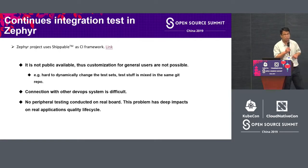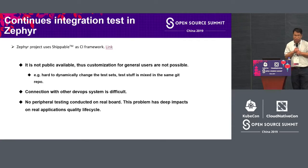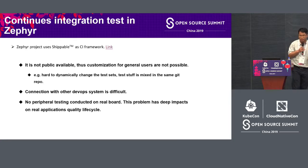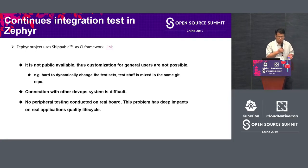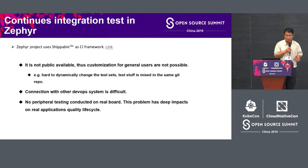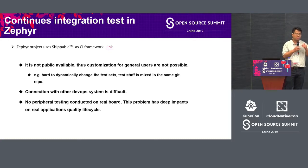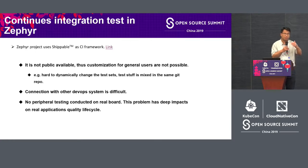For Zephyr itself, it has Shippable as the CI framework. Shippable is not publicly available, meaning it is not possible for customization or for general users because a license is required. Also, it is very hard to dynamically change the test sets.